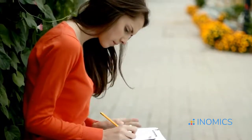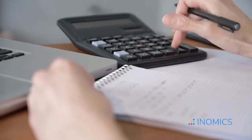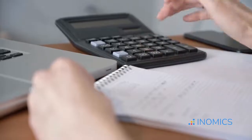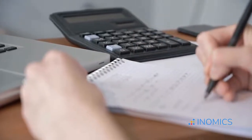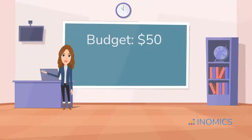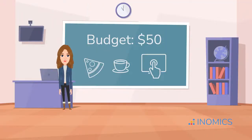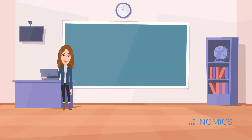Let's start with the basics. Consumer Theory is the study of how people decide to spend their money based on their preferences and their income. Imagine you've got a budget — say $50. You can spend that money on pizza, coffee, or streaming subscriptions. How do you allocate that budget to get the most satisfaction? That satisfaction is what we call utility.